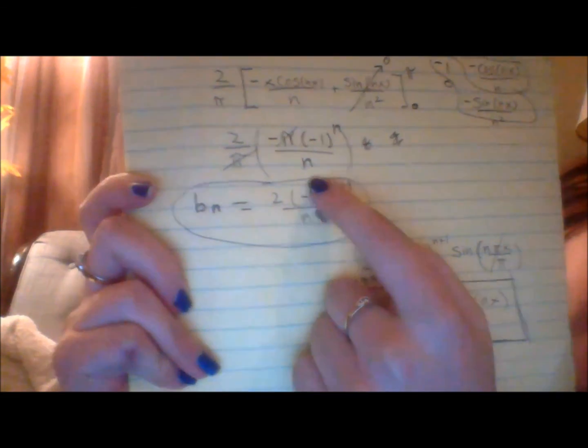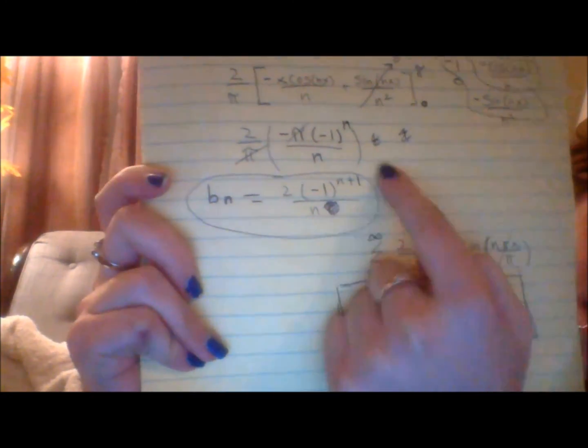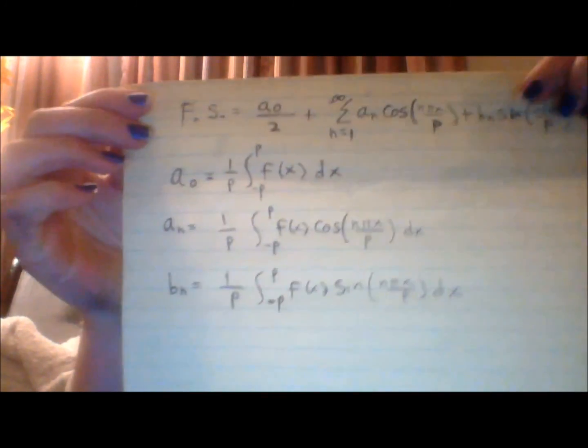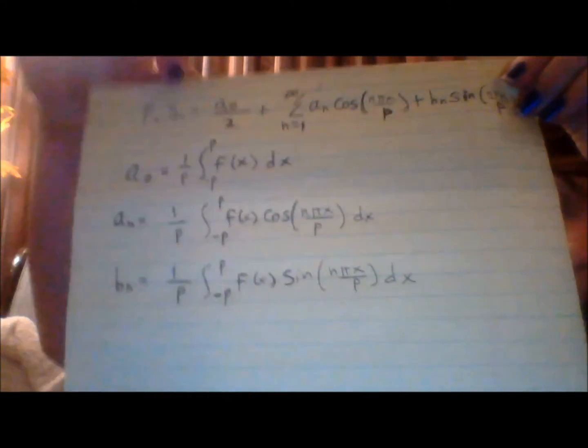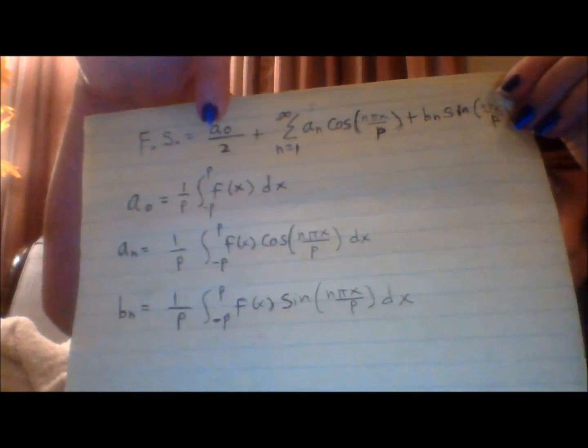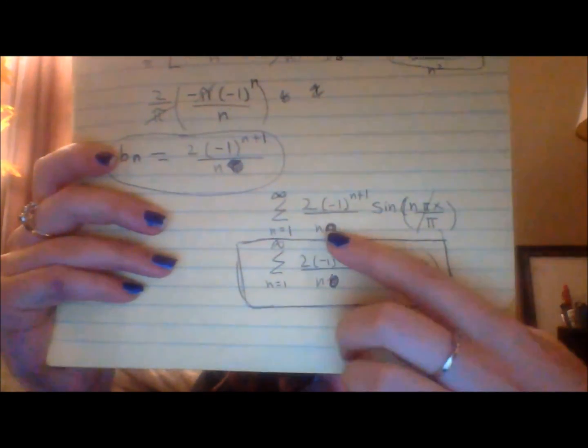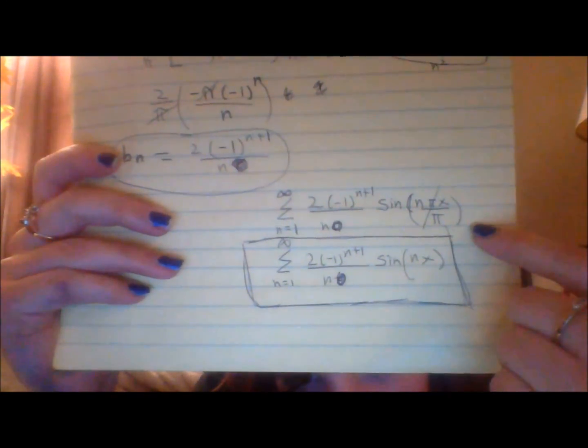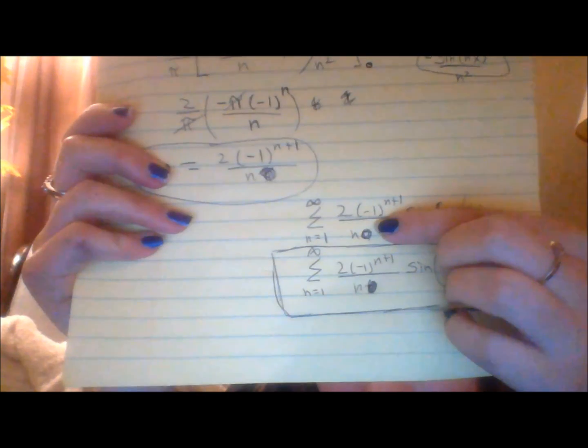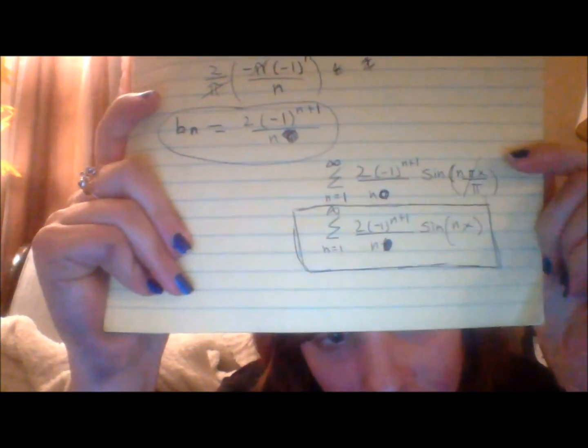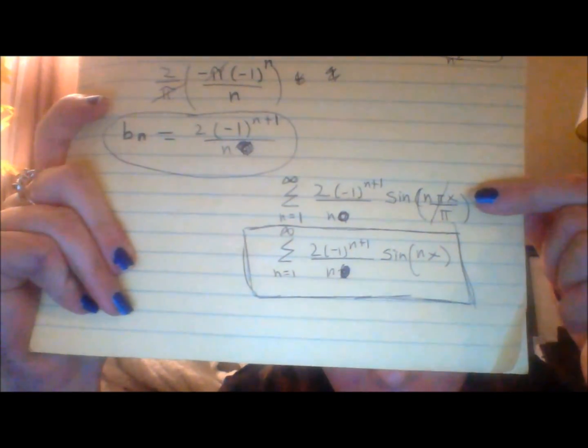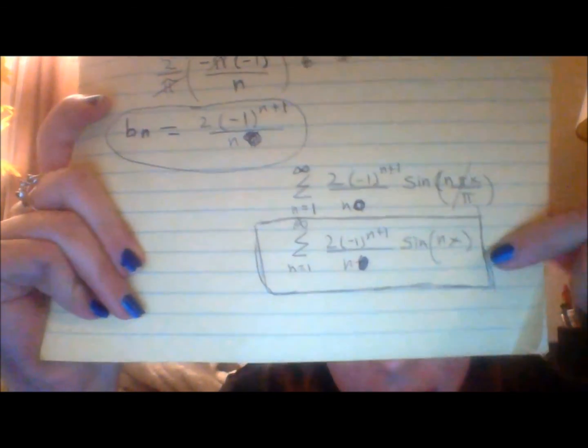So you can cancel those pi's, and here's your b sub n. Remember your original format of what your solution will always look like. You know these two are 0, b sub n you just found it. So plug that in, and you end up with this. Sorry about that weird 0 thing, that was a mistake. And there you go.